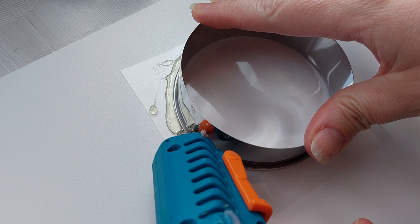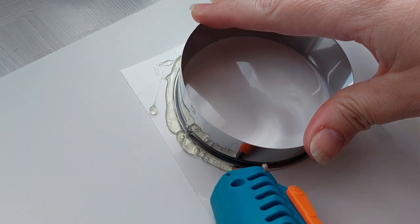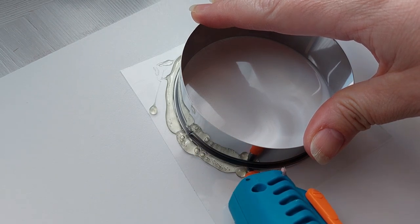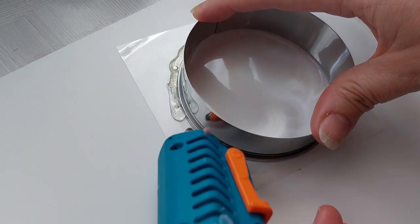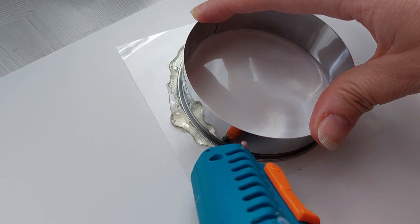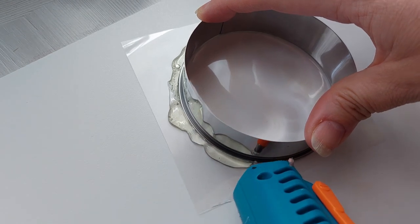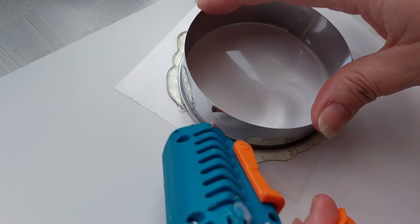I do go a little bit overboard with the hot glue but I tend to do that because I definitely do not want any seepages. Once I go around thoroughly first I then go around and put a second layer of hot glue on. This is probably unnecessary, this is just me being extra cautious.